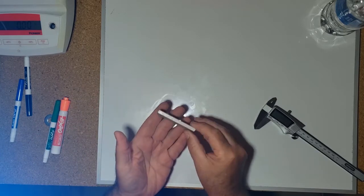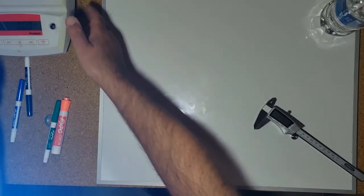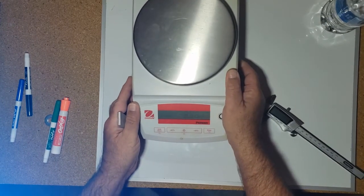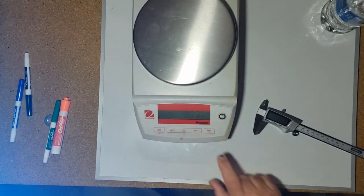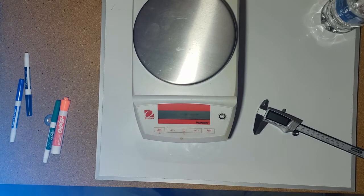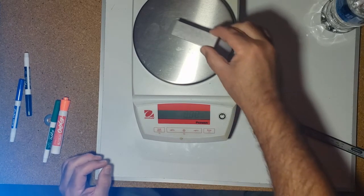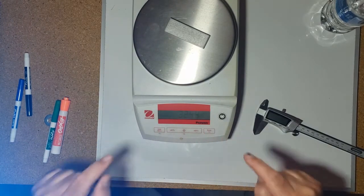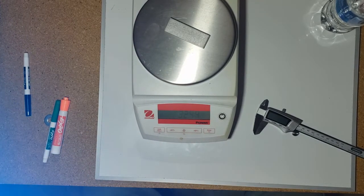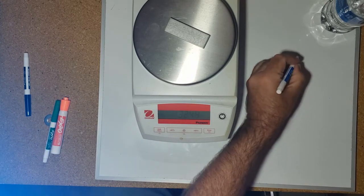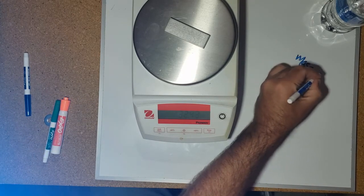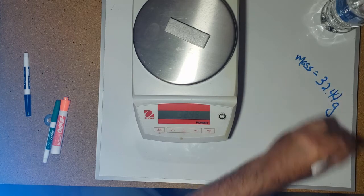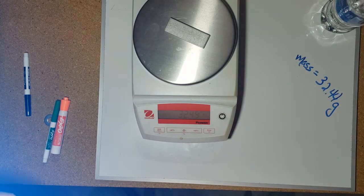To get density, we need mass and volume. Let's get our digital balance here. We'll zero it out and put it on there. The mass is 32.44 grams. Let me write that over here. Mass equals 32.44 grams.